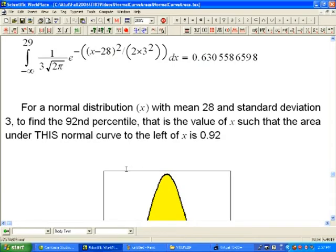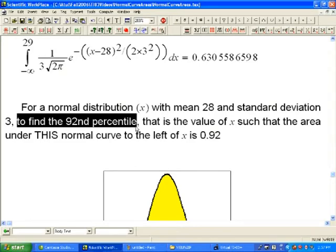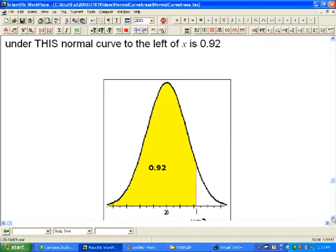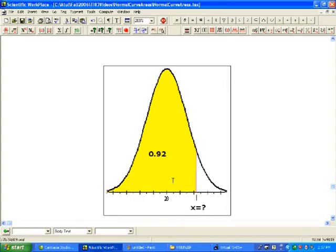Now let's go towards our reverse normal calculation. This time, instead of knowing a value of x and obtaining the areas, we will be given the area and we have to find the corresponding value of x. For example, here I have to find the 92nd percentile of this normal distribution with mean 28 and standard deviation 3. We want the value of x such that area to the left of this value of x is 0.92, or this is the 92nd percentile.